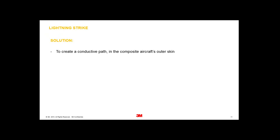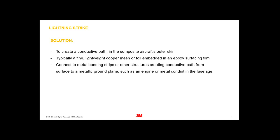So you need to build in a system that compensates for the lack of conductivity in the composite. The solution is to create a conductive path in the composite's outer skin — typically a lightweight copper mesh or foil embedded into an epoxy surfacing film, providing conductivity as well as a smooth, tough surface finish below the paint. These are connected to metal bonding strips to create a conductive path to earth, dissipating the lightning energy and considerably reducing damage.